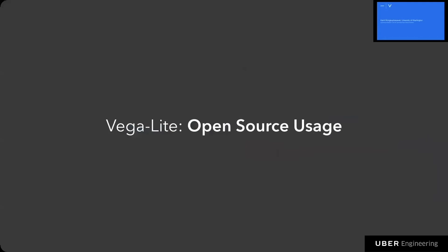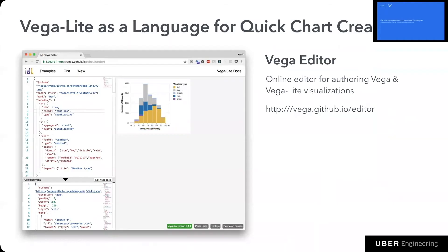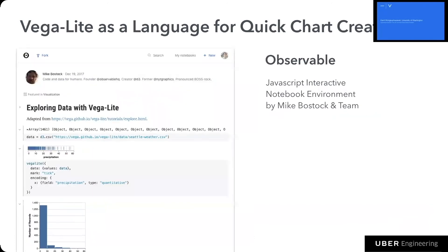Let's talk a bit more about how people are using VegaLite. You can write VegaLite code to quickly create charts, and to aid users we provide an online editor that helps validate and auto-complete the syntax so you don't have to remember everything. You can also use VegaLite in a platform like Observable, which is an online interactive JavaScript notebook environment that my advisor and team recently created — here's a tutorial showing how you can use VegaLite on that platform.